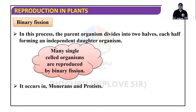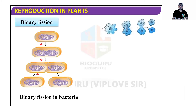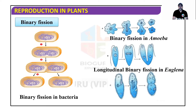Binary fission occurs in monerans such as bacteria and protists such as amoeba. There is also longitudinal binary fission in Euglena and transverse binary fission in Paramecia. The distinction is based on the plane or axis along which division occurs.